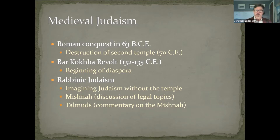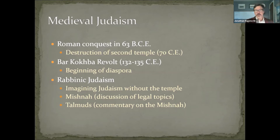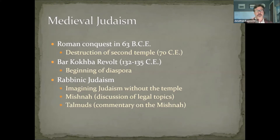Rabbinic Judaism converts some temple rituals into home rituals — for example, the importance of the Sabbath meal and the lighting of candles. All of these can be done without priests. This way of thinking about Judaism involved the development of the Talmud, a commentary on a legal text called the Mishnah. Judaism becomes very important in terms of the rise of Islam, and the role of law and legal experts — the sages in Judaism — becomes very important for our understanding of the rise of religious experts, the ulama, in Islam.